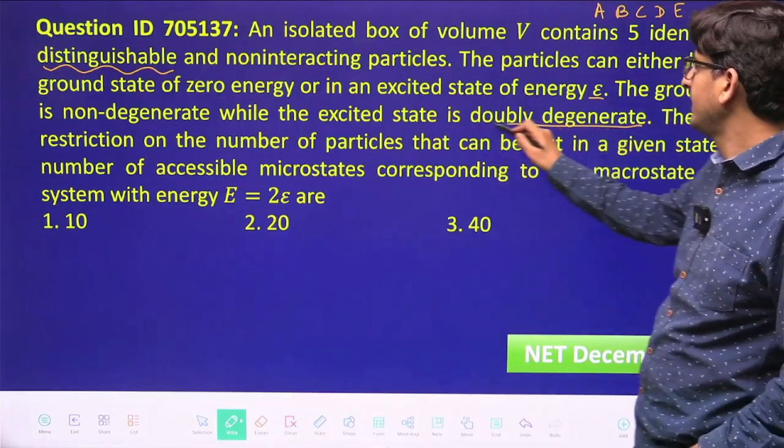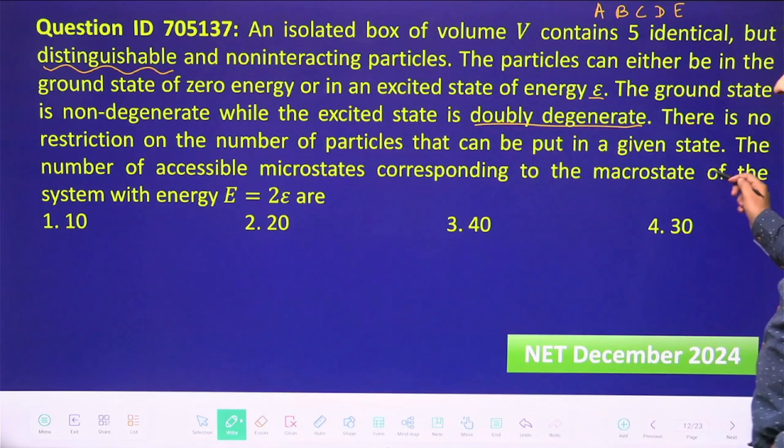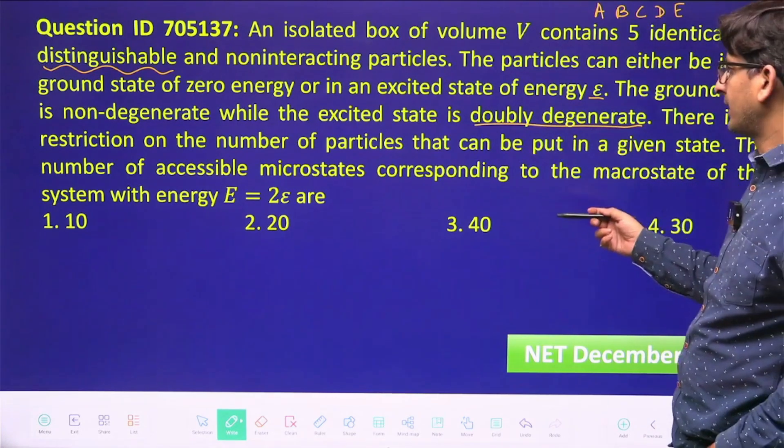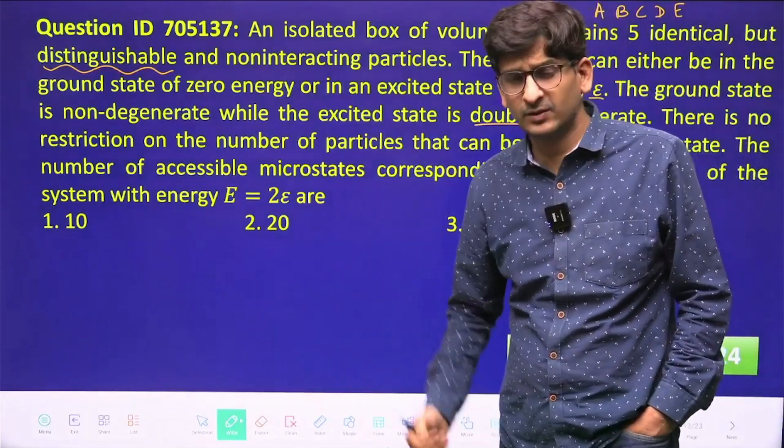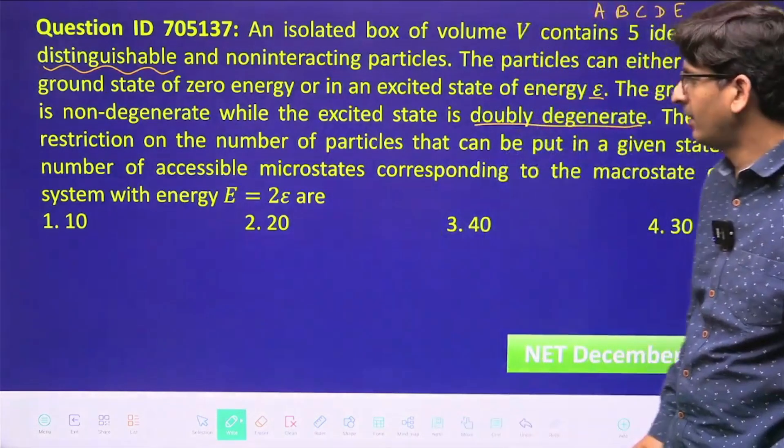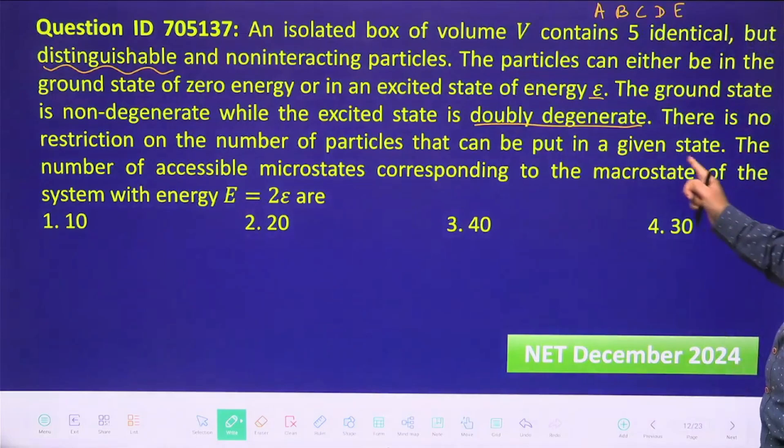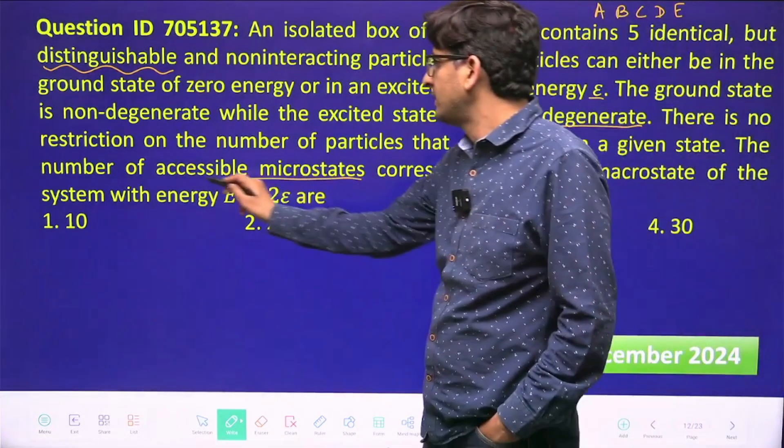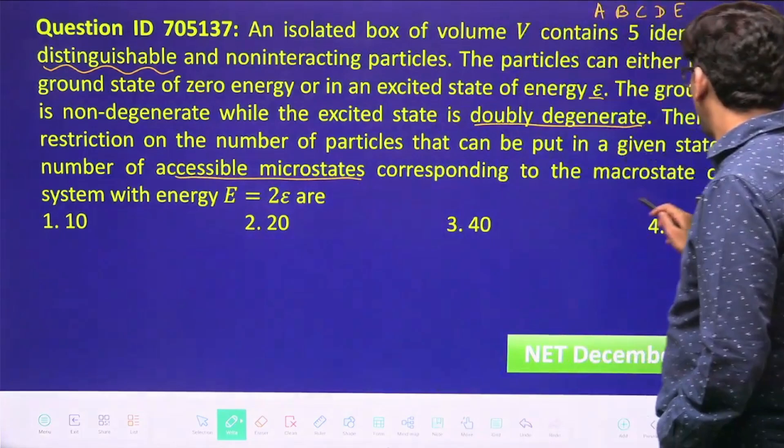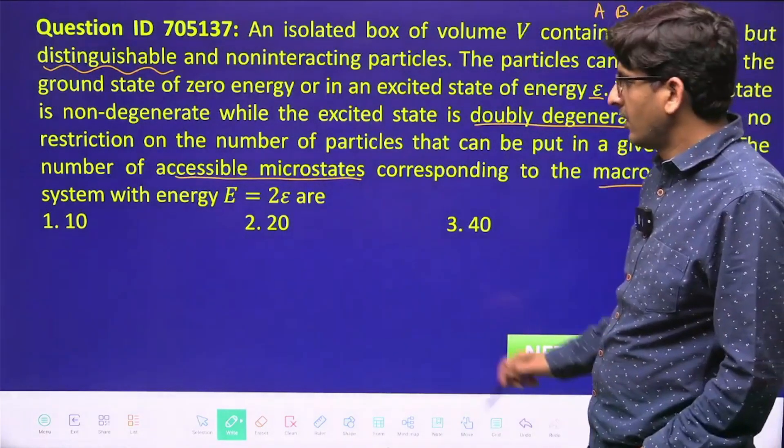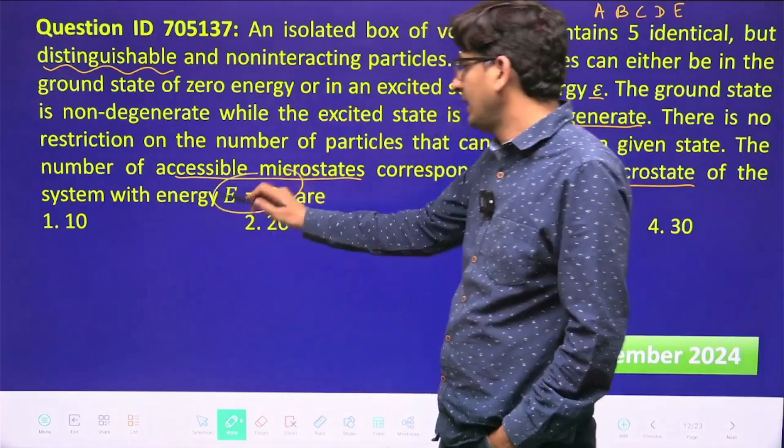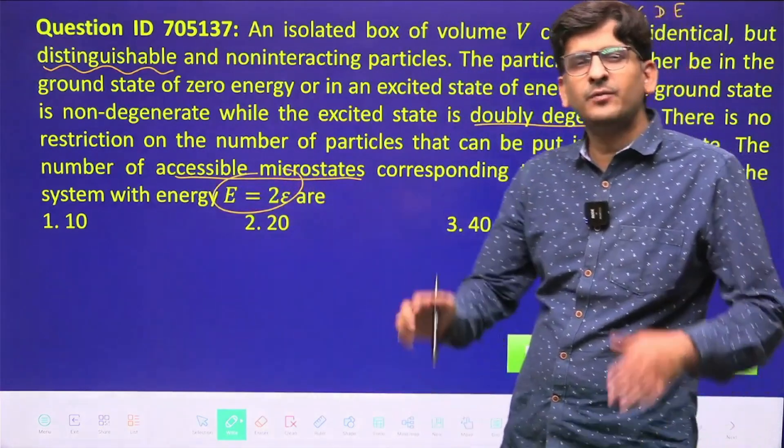The ground state is non-degenerate and the excited state is doubly degenerate. There is no restriction on the number of particles that can be put in a given state, so they are classical particles—there is no Pauli exclusion principle or restriction. The number of accessible microstates corresponding to the macrostate of the system with energy 2e—so we have to only tell the number of microstates when the total energy is 2e.